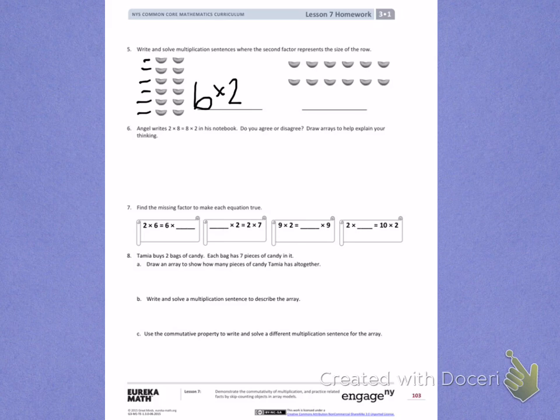Now I need to find my total. To help me find my total, I'm going to skip count: 2, 4, 6, 8, 10, 12. 6 times 2 equals 12.